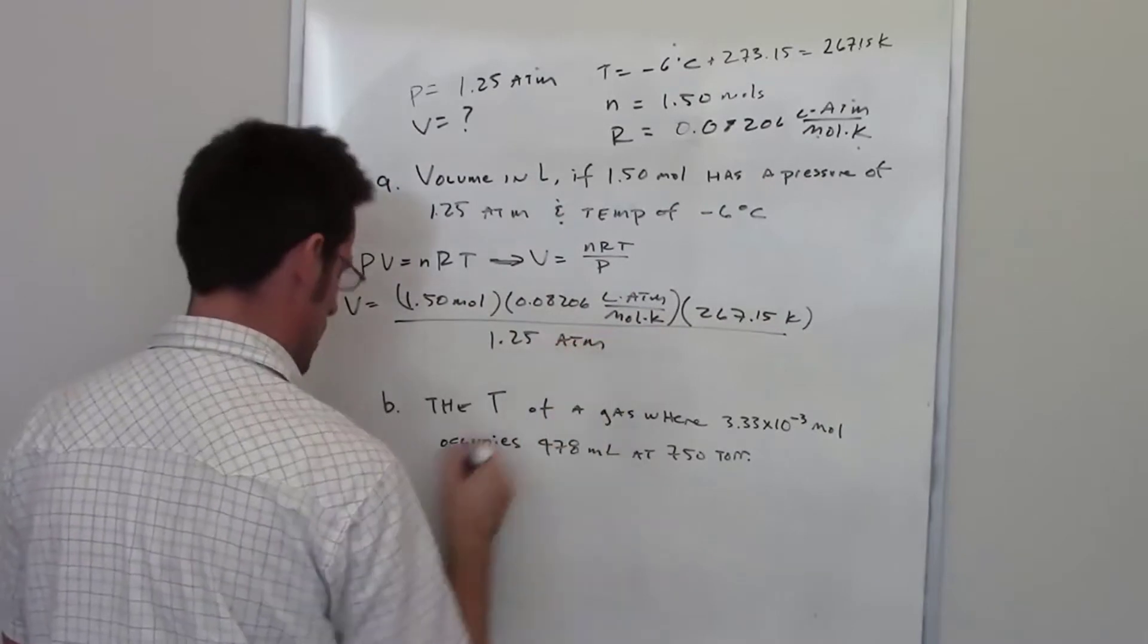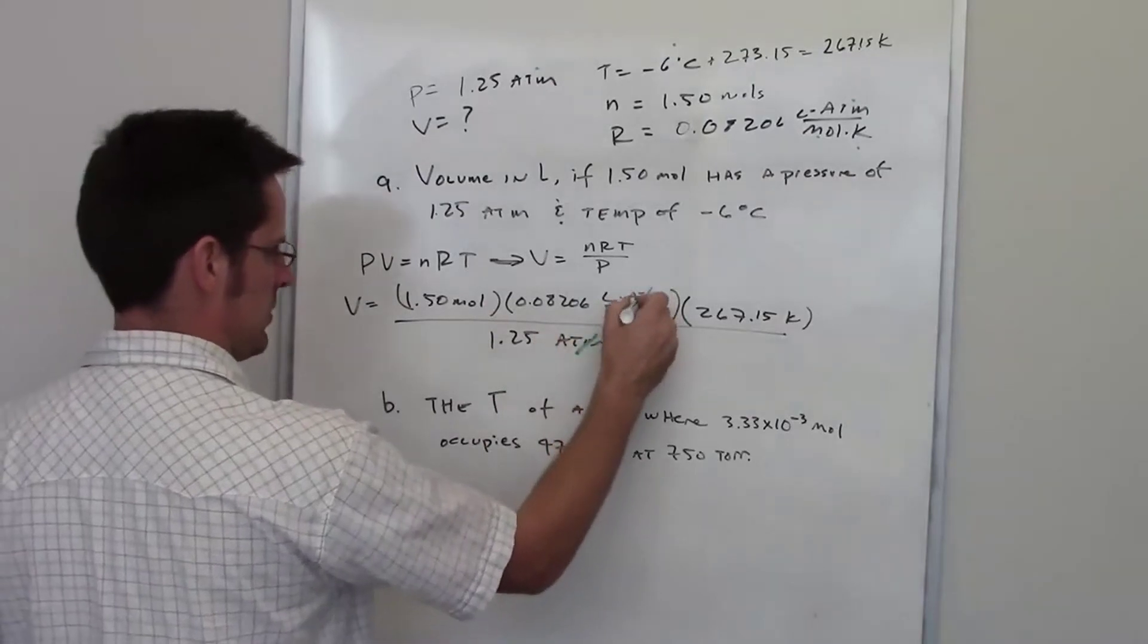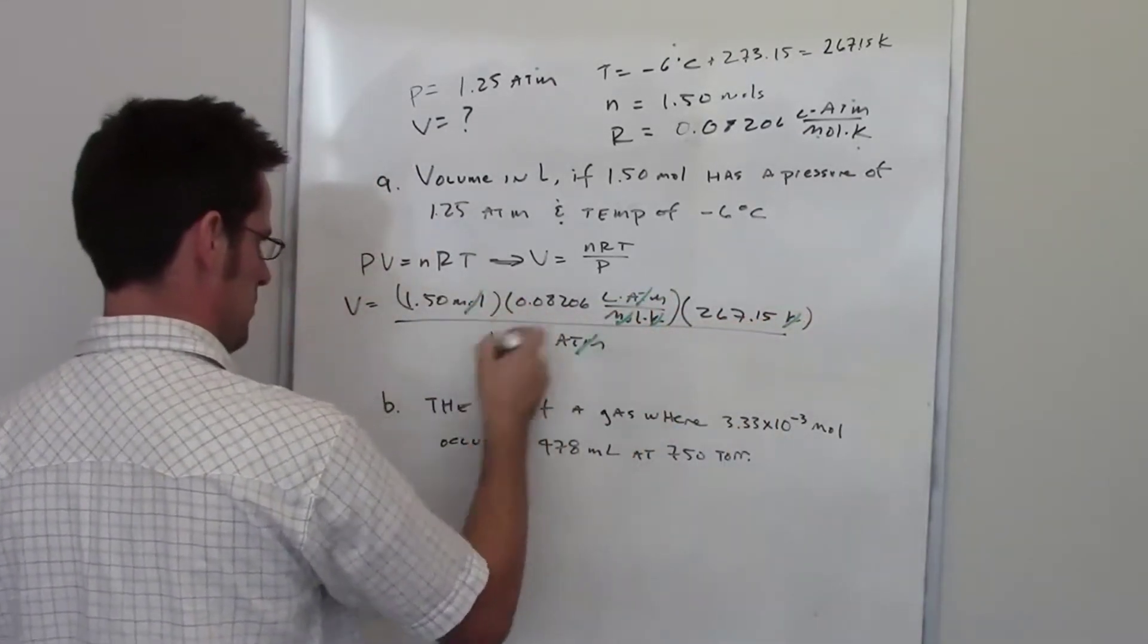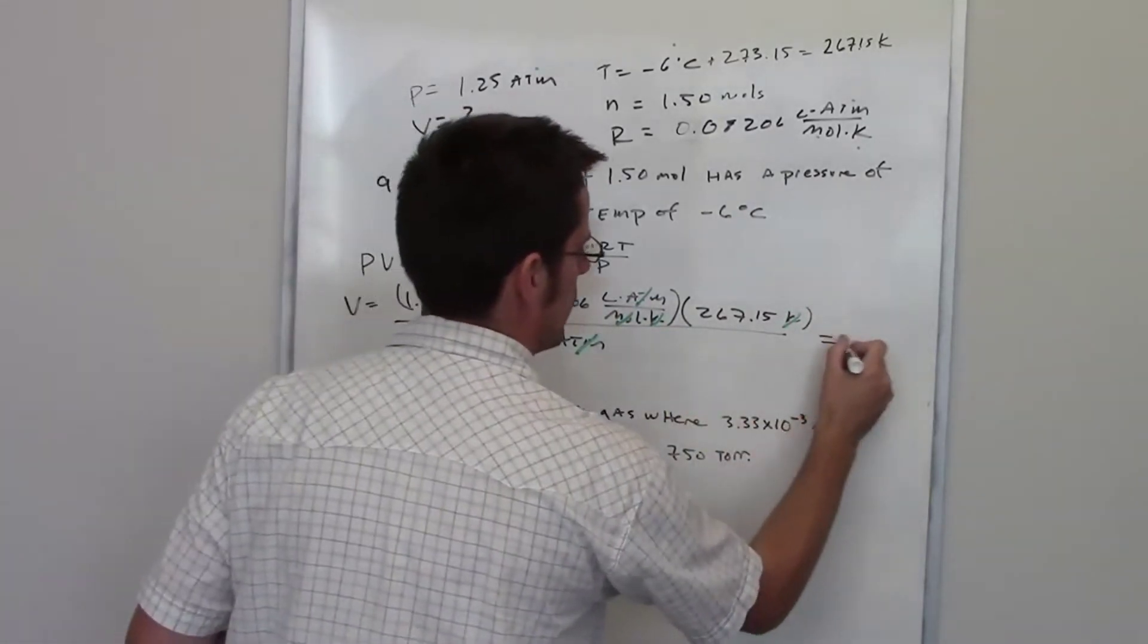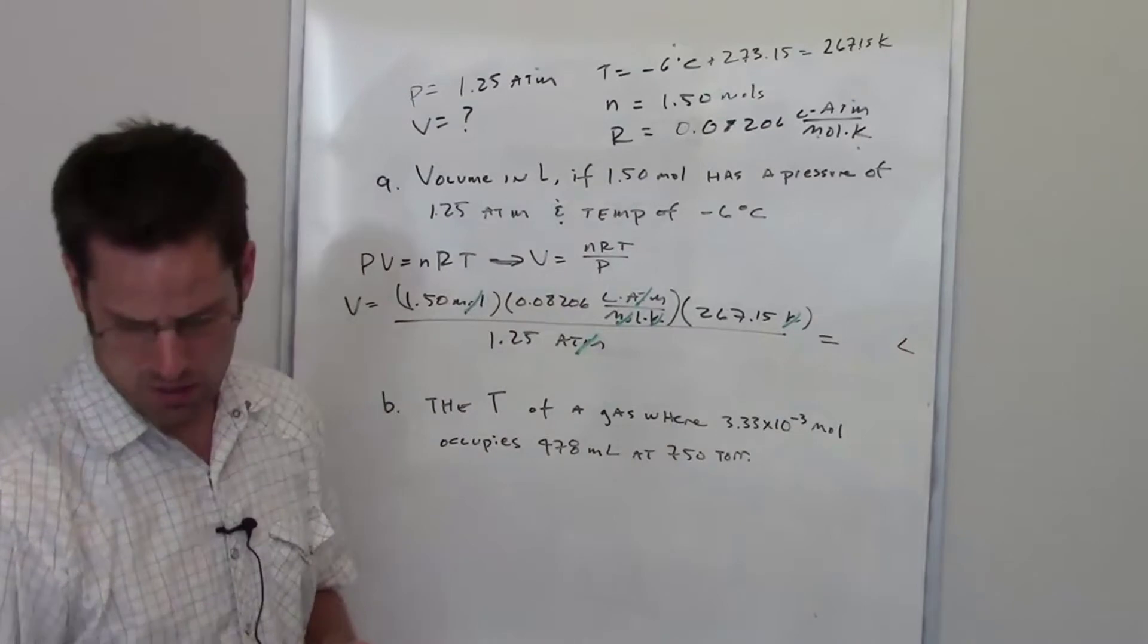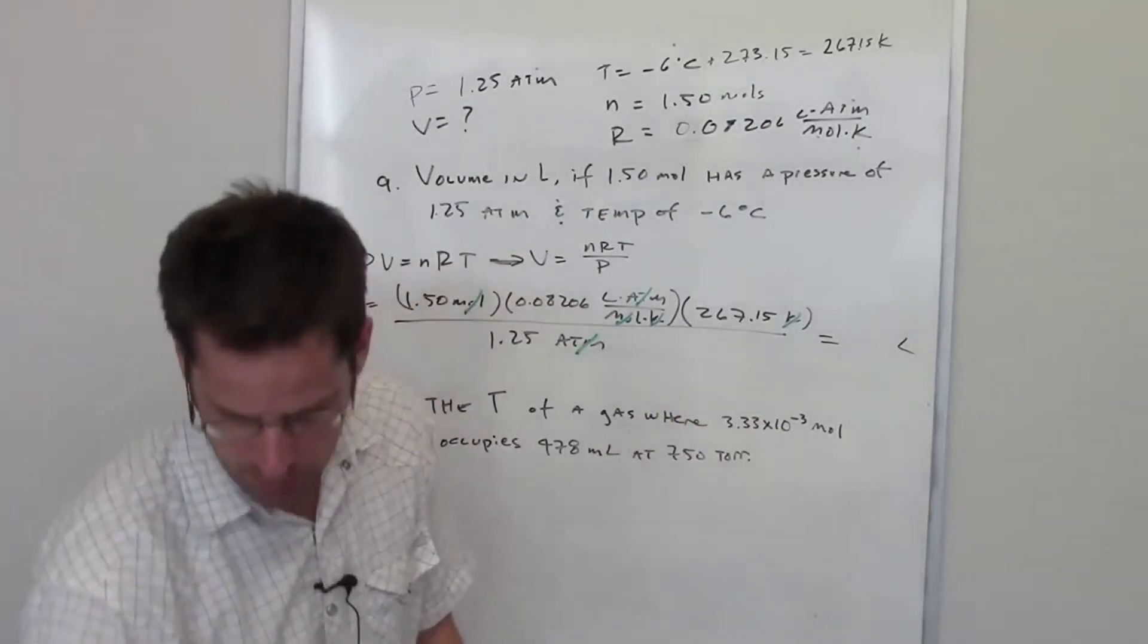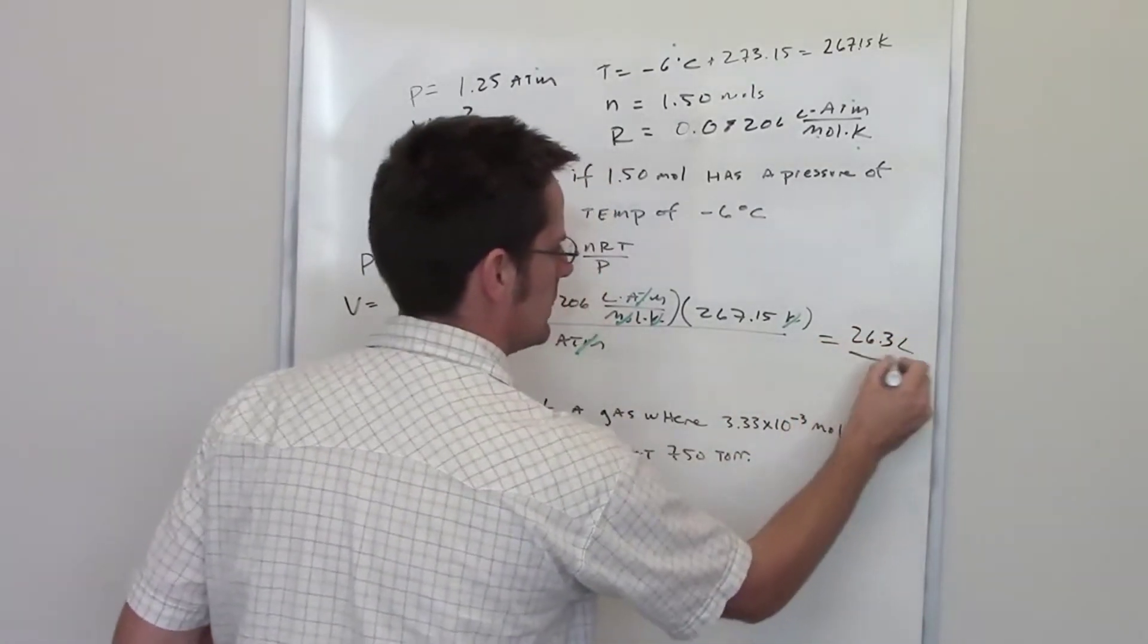If I've used all of the correct units, then I should be left with the units I'm searching for. Atmospheres cancel out. Kelvins cancel out Kelvins. Mole cancels out mole, and I'm left with liters, which is the units I'm looking for. When I do that in my calculator, the answer value that I end up getting is 26.3 liters.